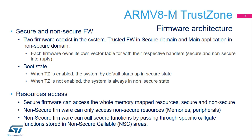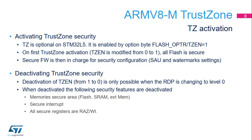At boot, when TrustZone is enabled, the system starts in secure state. Secure firmware can access the whole memory-mapped resources from either secure and non-secure domains. Non-secure firmware can only access non-secure resources. Non-secure firmware can access secure services only through a specific call gate entry point stored in non-secure callable, or NSC, areas. TrustZone security is optional and can be activated with an option byte. Once set, the flash is fully secure. Further split between secure and non-secure domains is defined by secure firmware through the configuration of the Secure Attribute Unit, or SAU, and other watermark registers.